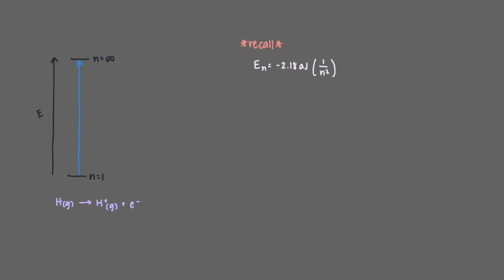Recall this equation. Remember that we can find delta E by using E final minus E initial. Let's first find E initial. We start with n equals 1, so our E initial is negative 2.18 times 10^-18 joules.